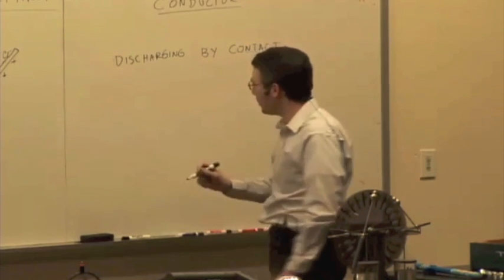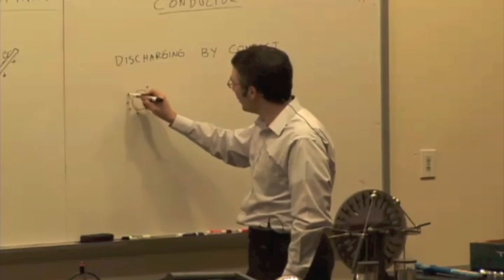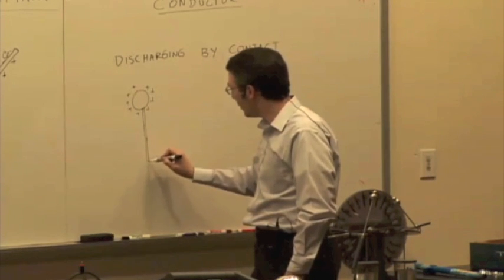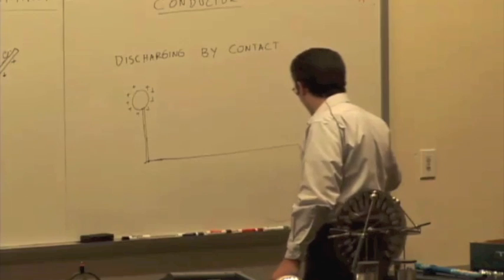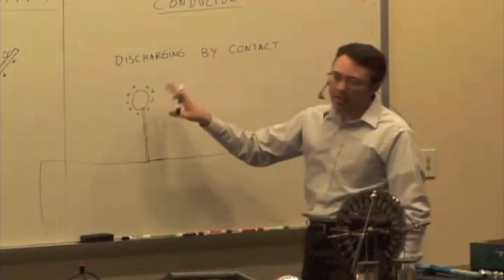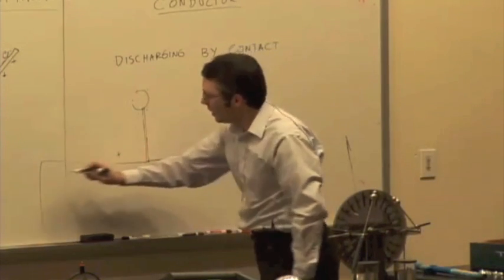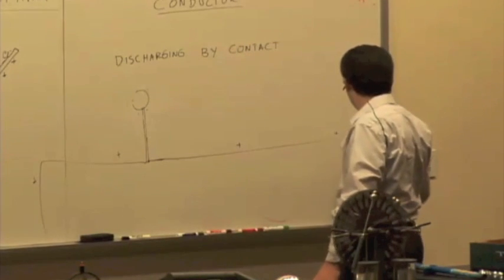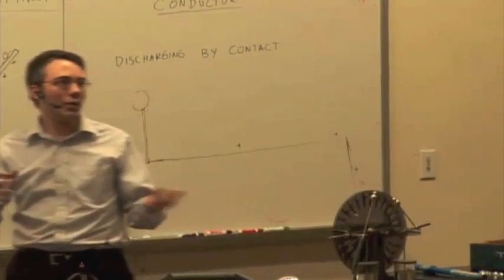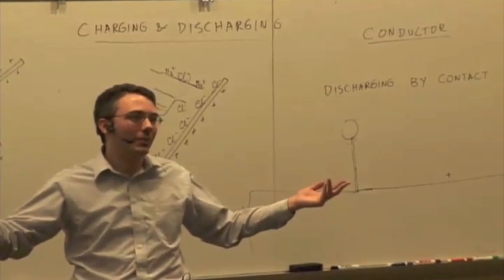But when you're talking about discharging by contact, there's a particular special case. If you have an object that's charged up, and you want to get rid of that charge, and so you have a wire or some conductor that is connected to a very, very large conductor, then that charge will spread out over the entire object. And if it's large enough, that charge will be so spread out that it's hardly noticeable anymore. What's a great big conductor that we could use to make this charge spread over? Earth. What's that called? That's called grounding.